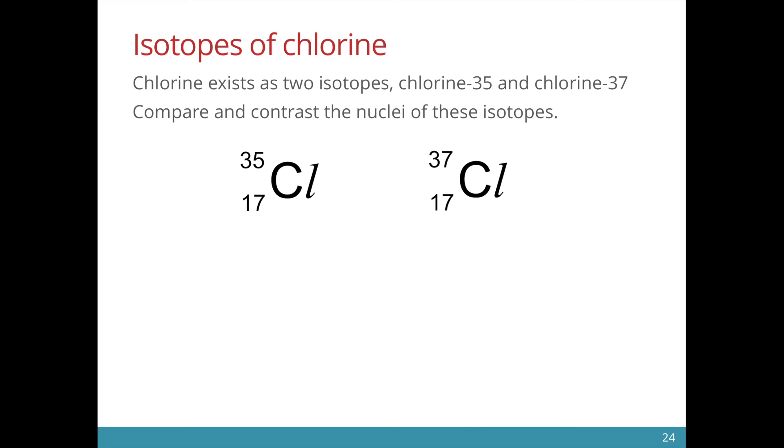So take for example chlorine. We have two different isotopes, chlorine-35 and chlorine-37. They both have the same number of protons which is 17 but they have different mass numbers because chlorine-37 has two more neutrons than chlorine-35.